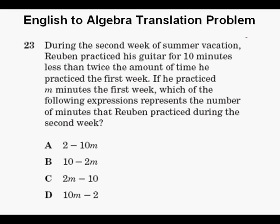During the second week of summer vacation, Ruben practiced his guitar for 10 minutes less than twice the amount of time he practiced the first week. If he practiced m minutes the first week, which of the following expressions represents the number of minutes that Ruben practiced during the second week?